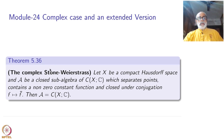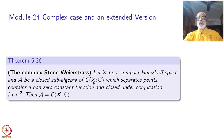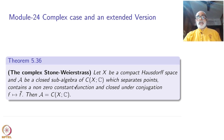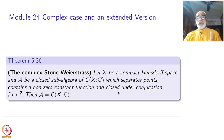Theorem 5.36 is the complex Stone-Weierstrass theorem. Let X be a compact Hausdorff space, A be a closed subalgebra of C(X,C). This is the space of complex-valued continuous functions on X, which separates points and contains a non-zero constant.